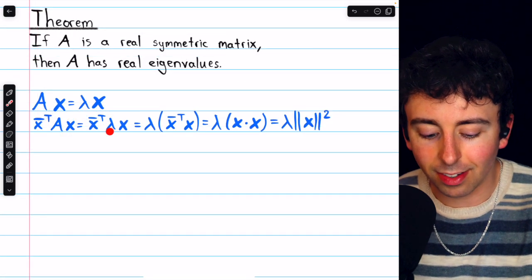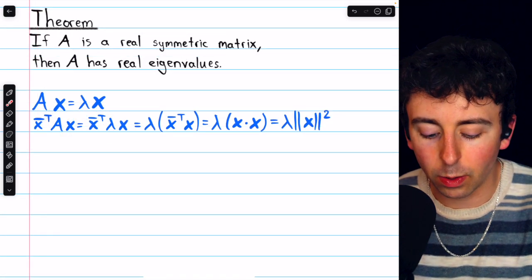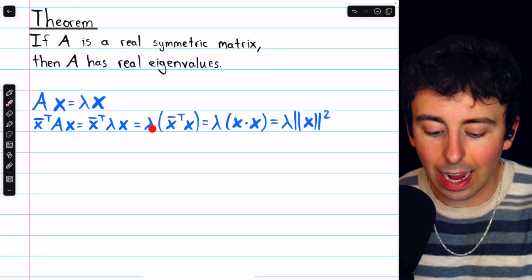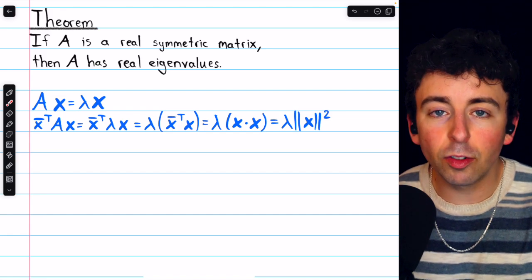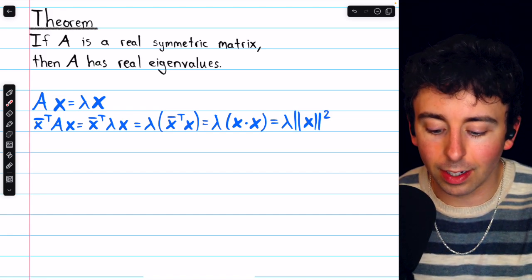This lambda is just a scalar, so we can slide it out to the left, leaving us with lambda times x conjugate transpose times x. But x conjugate transpose times x is just another way of writing the dot product.